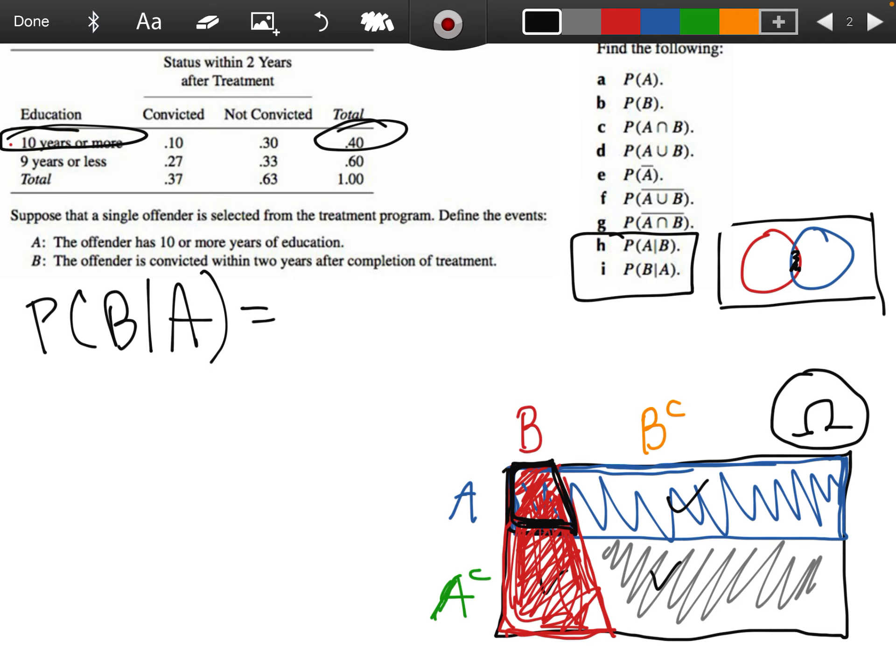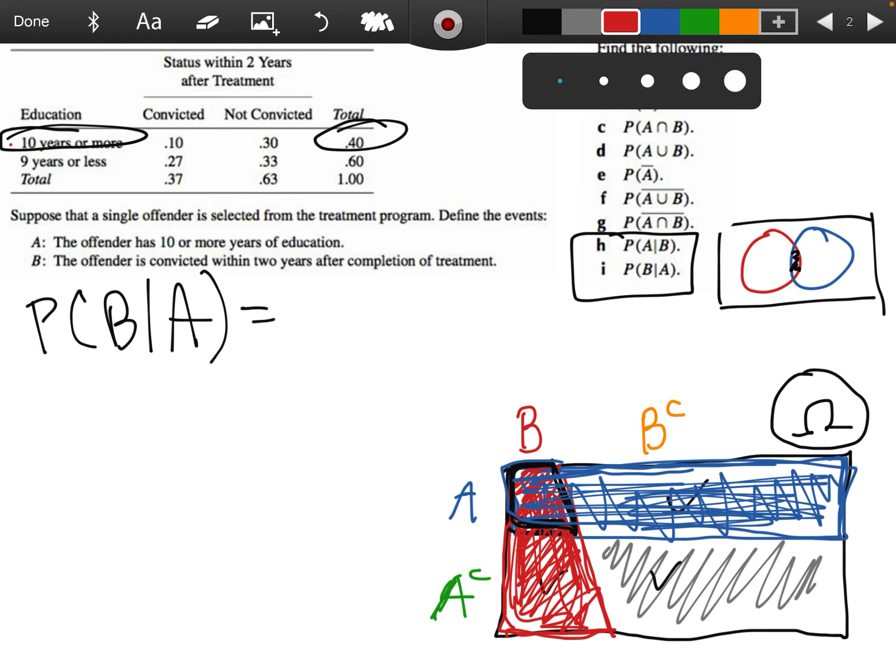So this is saying, all right, we already know that we're in the 40% with 10 years or more of education. We're in that given part, the blue is the A. We're in that blue bit. Once we're already there, once we know we're dealing with someone from that circumstance, what's the probability furthermore that they are, that B is true, which of course, once you're in that blue area when we talk about B, it's B intersect A. So again, just going back to that really a definition of conditional probability.